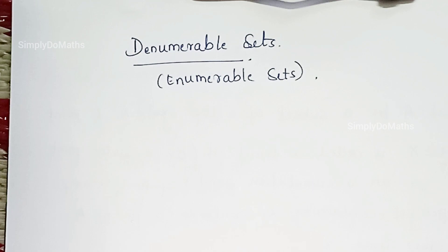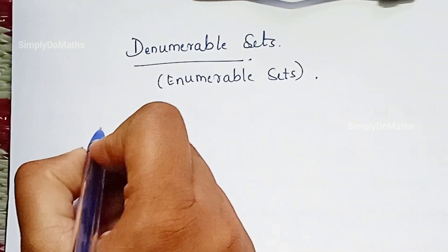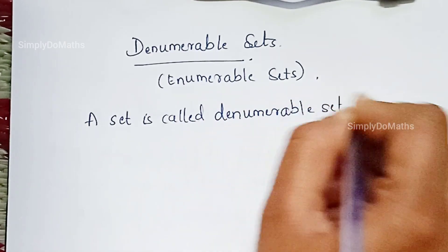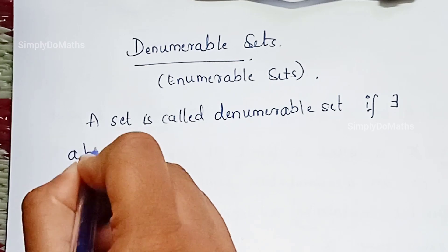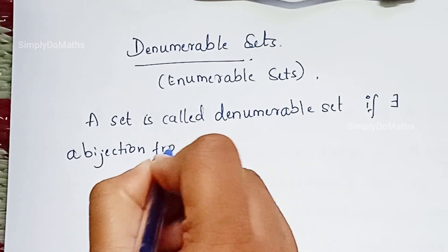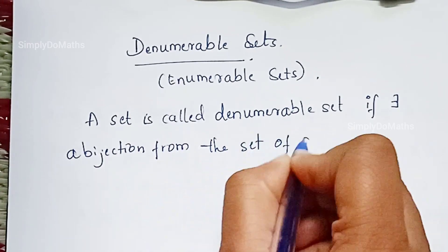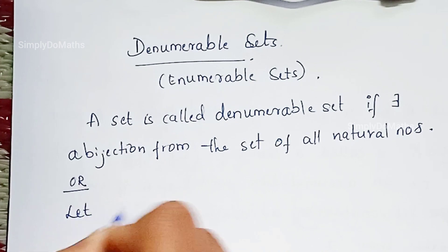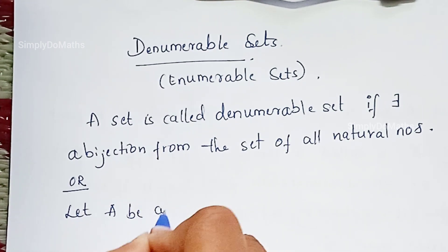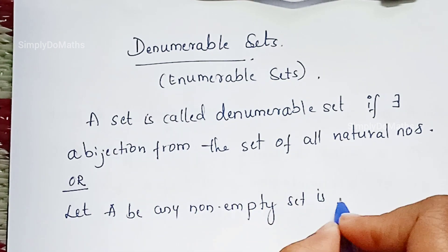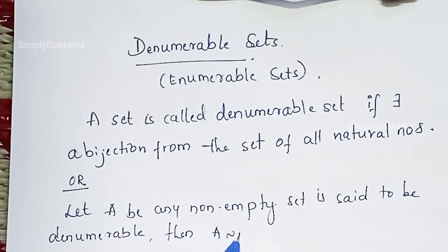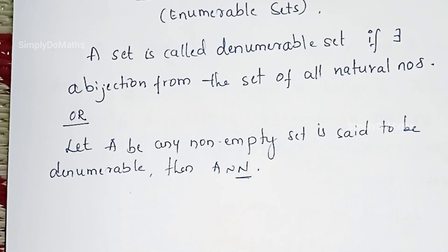Let's define this: a set is called an enumerable or denumerable set if there exists a bijection function from the set of all natural numbers. In other words, let A be any non-empty set which is said to be denumerable. Then A is equivalent to N, where N is the set of natural numbers. Since this is an equivalence relation, A equivalent to N and N equivalent to A are both the same.